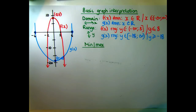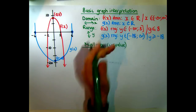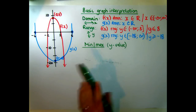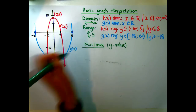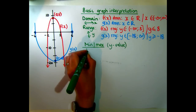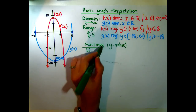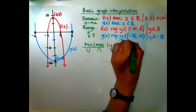Another easy question is finding the minimum or maximum value of the graph. They're asking for the y value at the turning point. For a minimum value you'll have a happy graph — it goes infinitely upward from that point. A maximum is had by a sad graph that goes infinitely downward. You simply read the turning point off the graph.